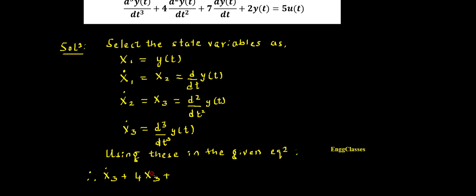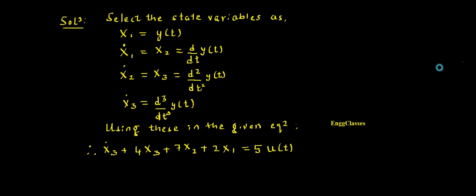Plus seven times dy(t)/dt, which is nothing but seven times X2, plus two times y(t), so I can write two times X1, equals five times u(t). So now I have replaced the given differential equation using the state variables. Once this is done, I will write the expression for X3-dot.